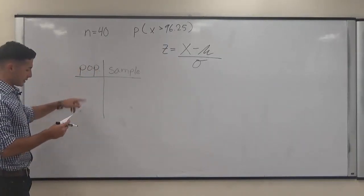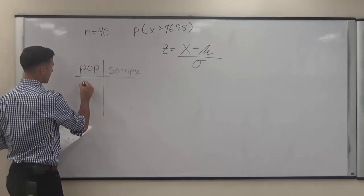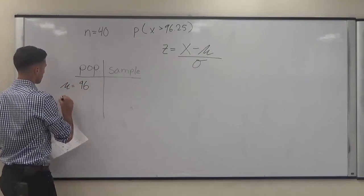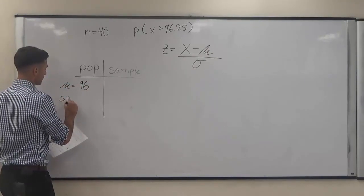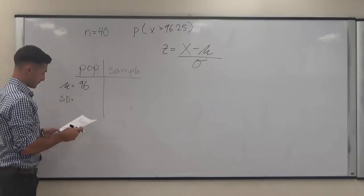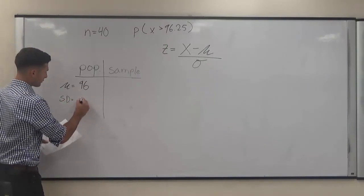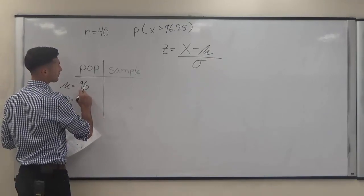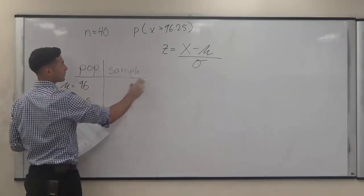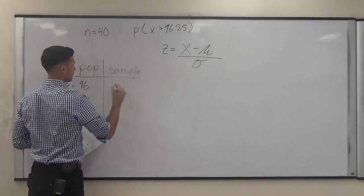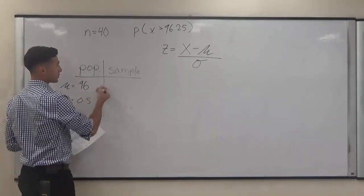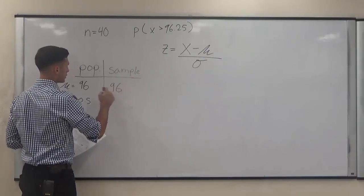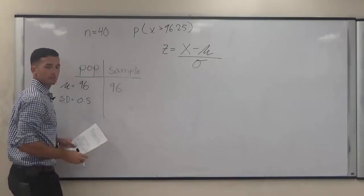We want to plug in sample info to be able to solve this. So the problem gives us a population mean of 96 and it gives us a standard deviation of 0.5. The 96, this population mean, can be directly plugged in based on the central limit theorem. We can use it for our sample mean. So we're going to use 96 in our equation.